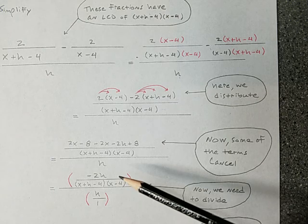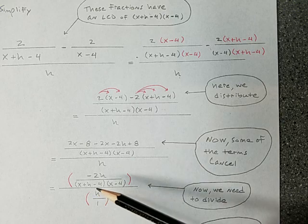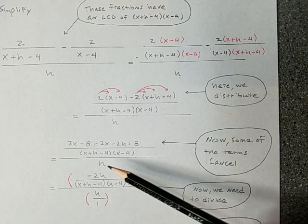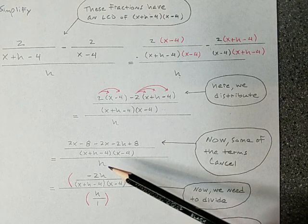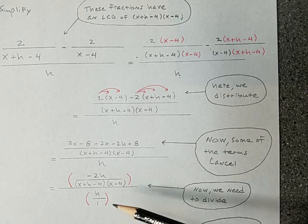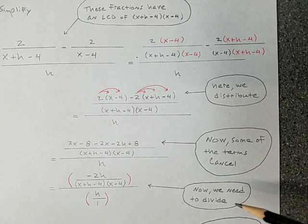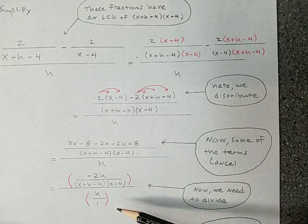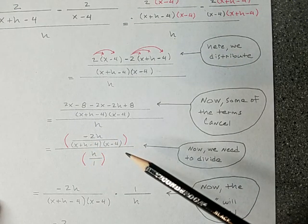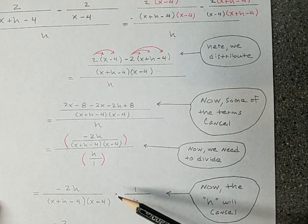So we get to this part. I've got a fraction up here. Negative 2h over x plus h minus 4 times x minus 4 divided by, well, h doesn't look like a fraction. But just to be uniform about it, I'll put h over 1. H over 1. So it's one fraction divided by another. We need to divide. So how do you do that? How do you take one fraction and divide it by another? You multiply by the reciprocal. So what this really is, is negative 2h over x plus h minus 4 times x minus 4 times 1 over h.